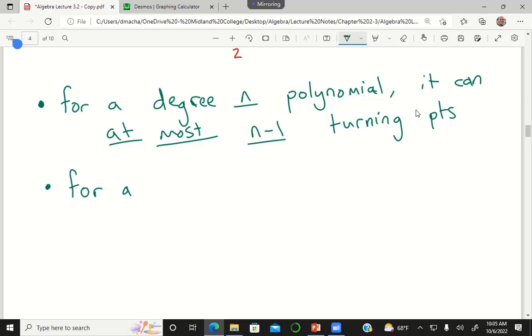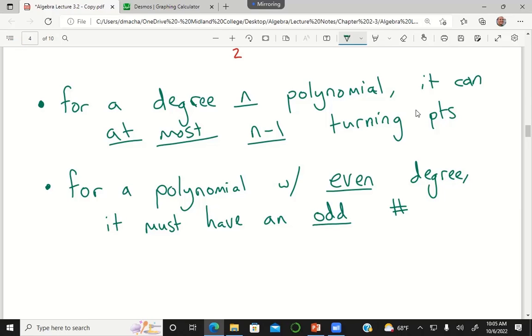For a polynomial with even degree, it must have an odd number of turning points.